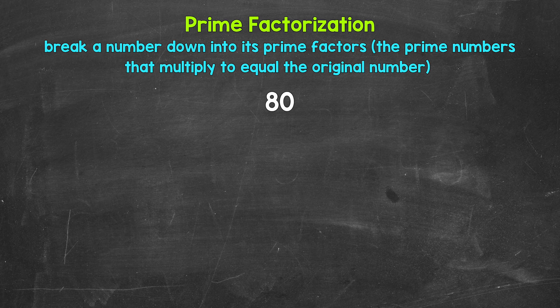So taking a look at 80, we need to start breaking this down by thinking of two factors — two numbers that multiply to give us 80. Well, 4 and 20 are factors of 80. 4 times 20 equals 80. So let's break this down into 4 and 20.